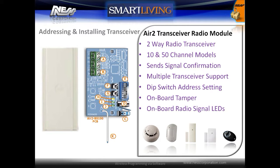The Air 2 transceiver is a two-way radio receiver and transmitter that comes in both a 10 and 50 channel model. It is capable of receiving radio signals from devices and sending confirmation. The system supports multiple transceivers for large radio coverage, and transceivers are addressed by onboard DIP switches, with onboard tamper protection and onboard signal LEDs for status.